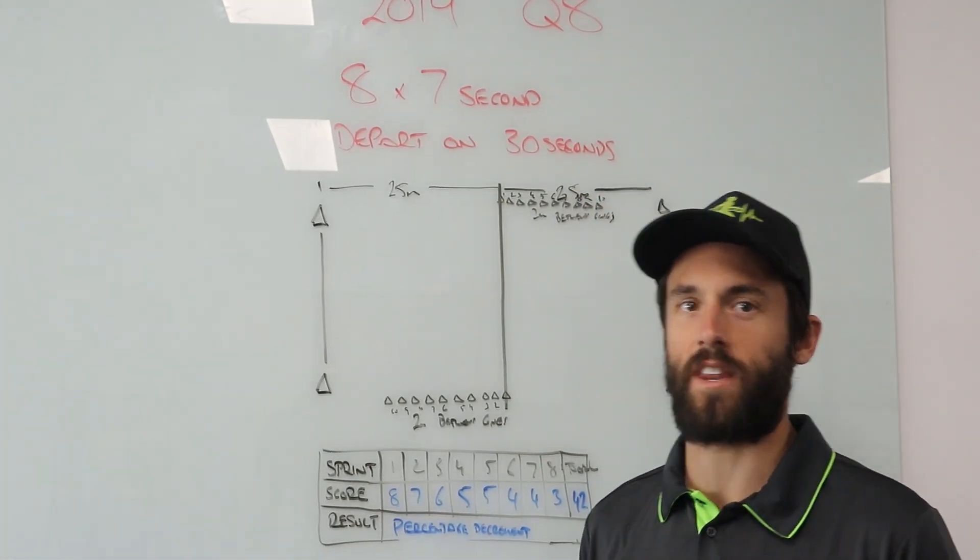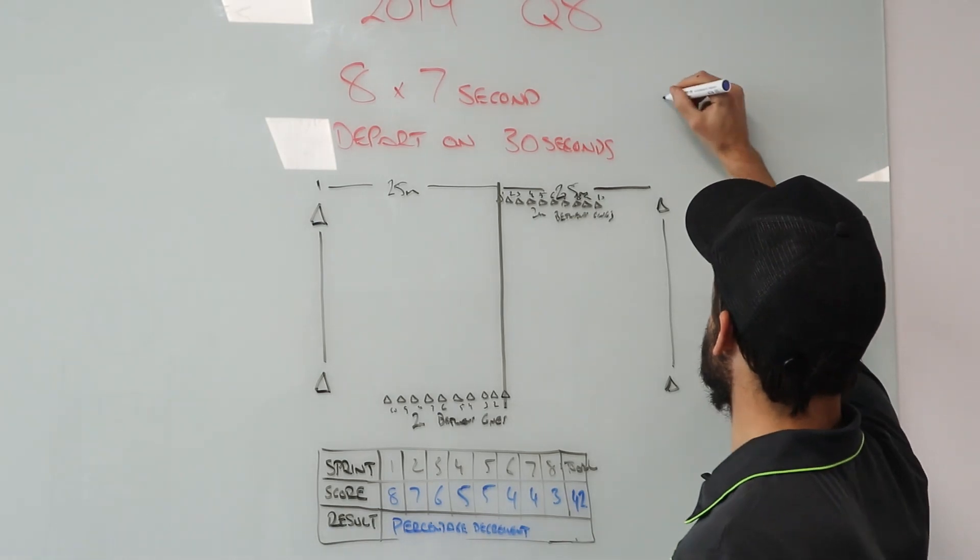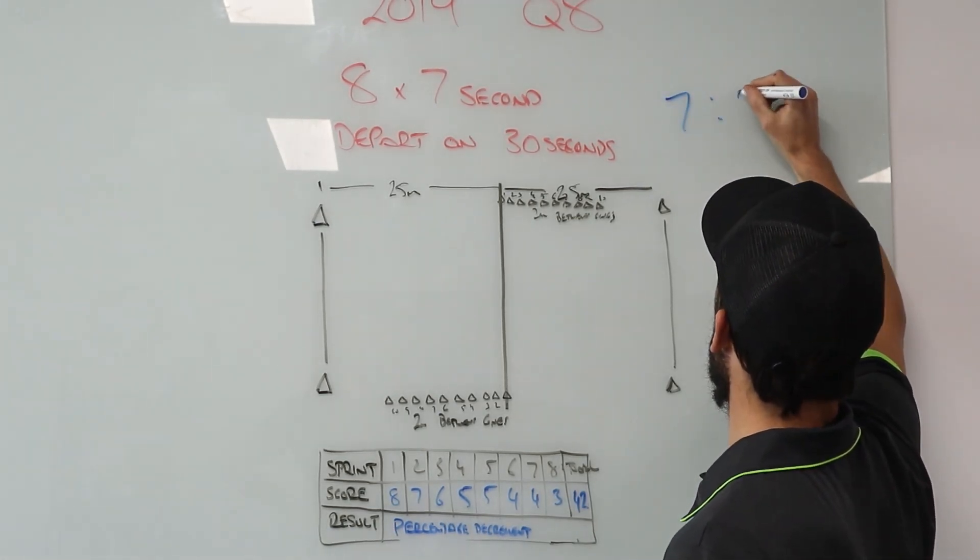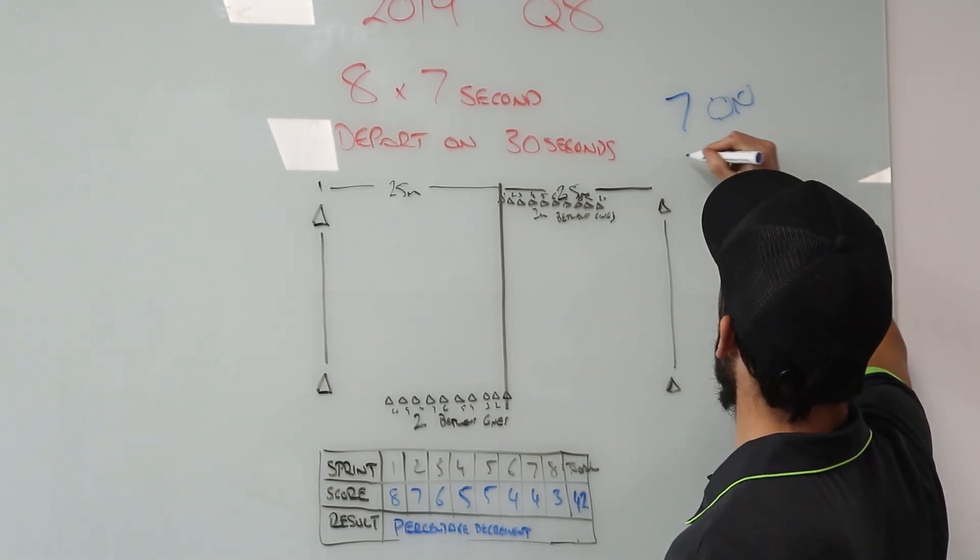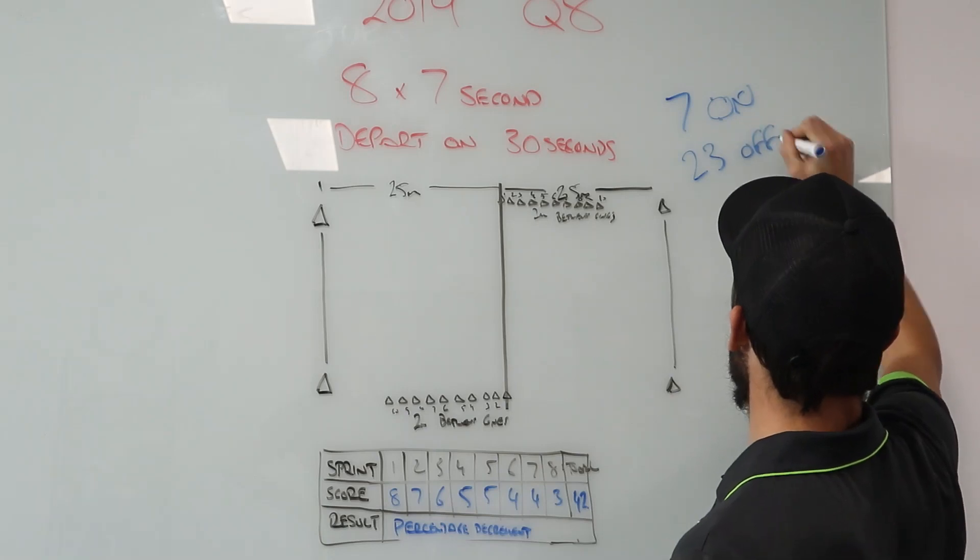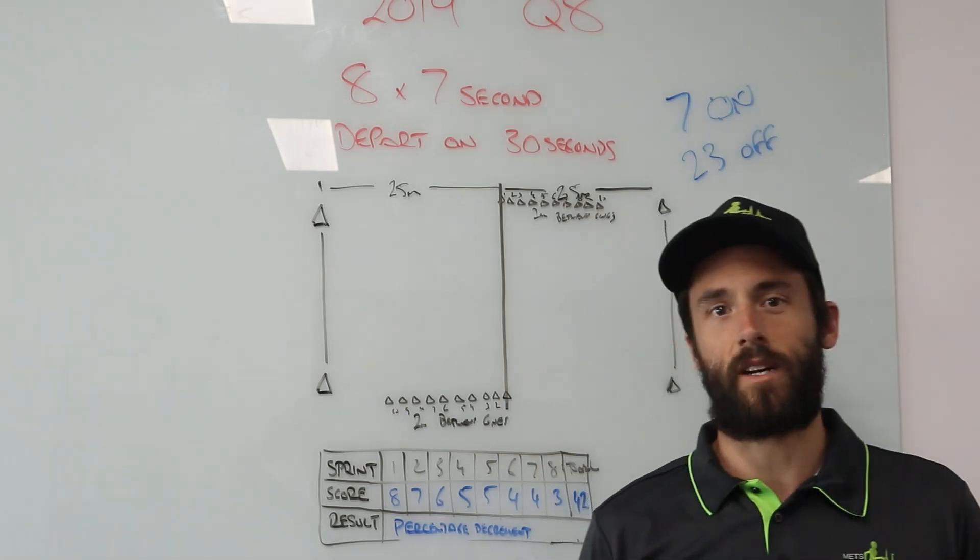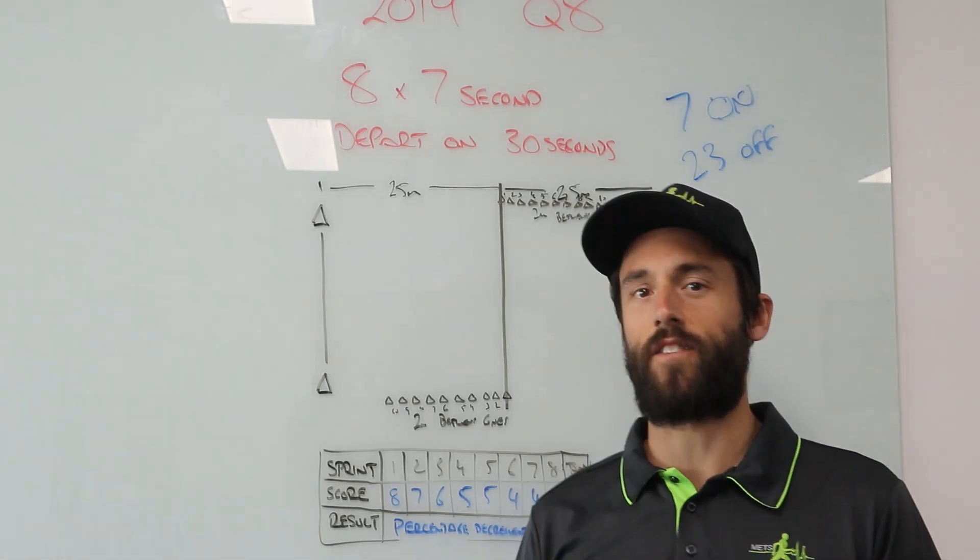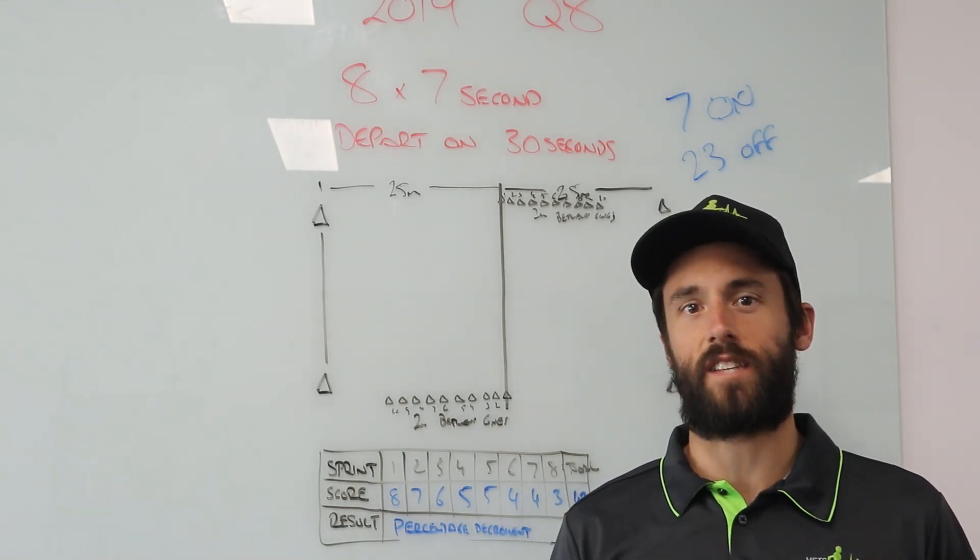If I was sitting down to my exam paper and I just read that, I would be writing something like seven on 23 off. I might just jot that down for myself, it's a seven second max sprint and then a 23 second recovery each time.